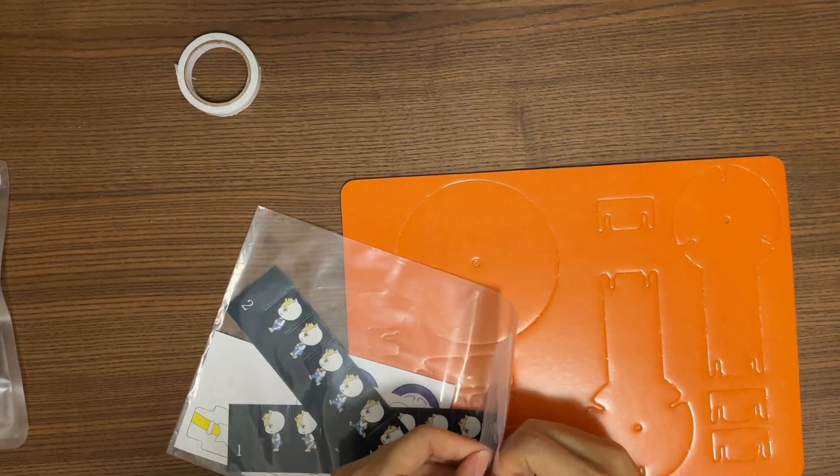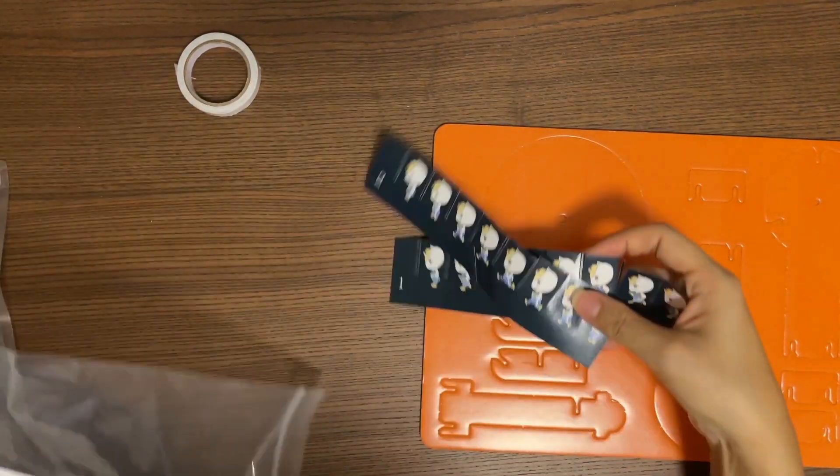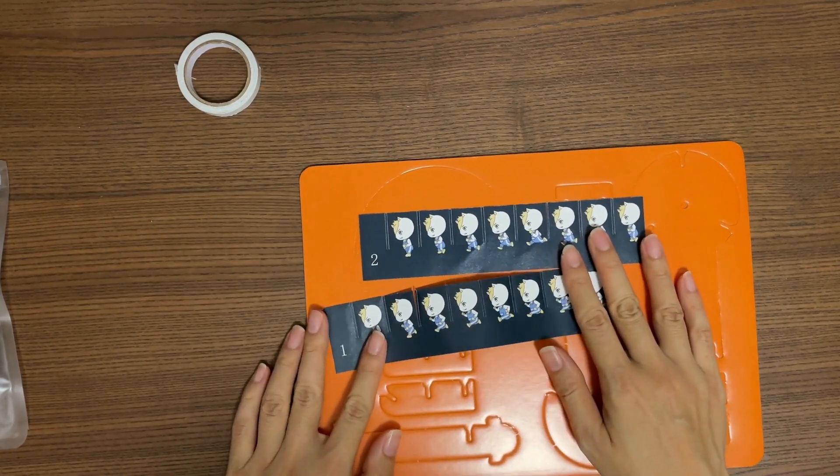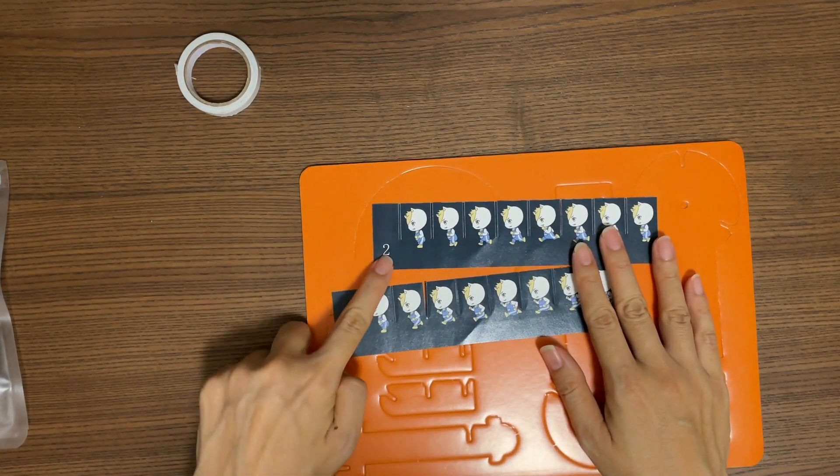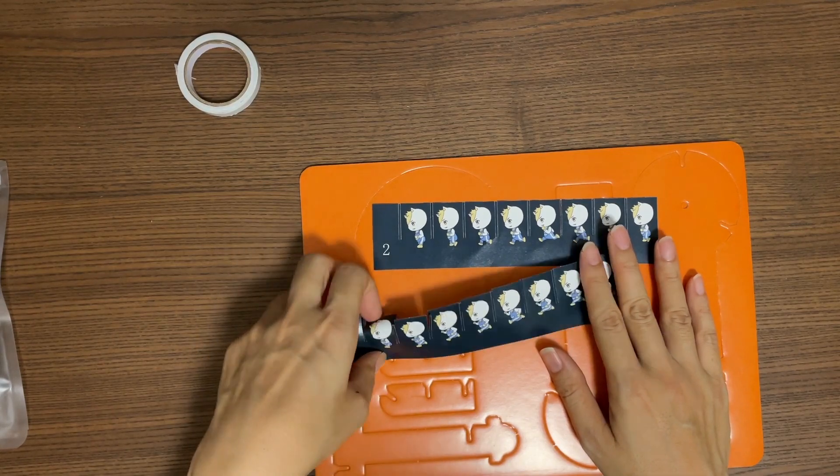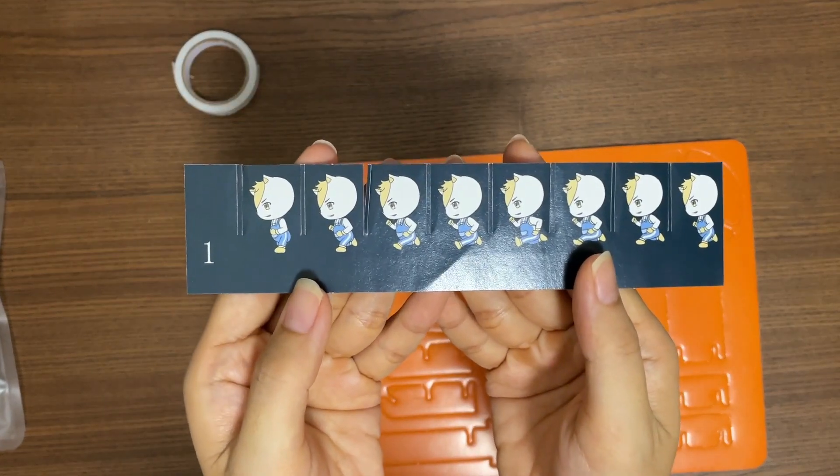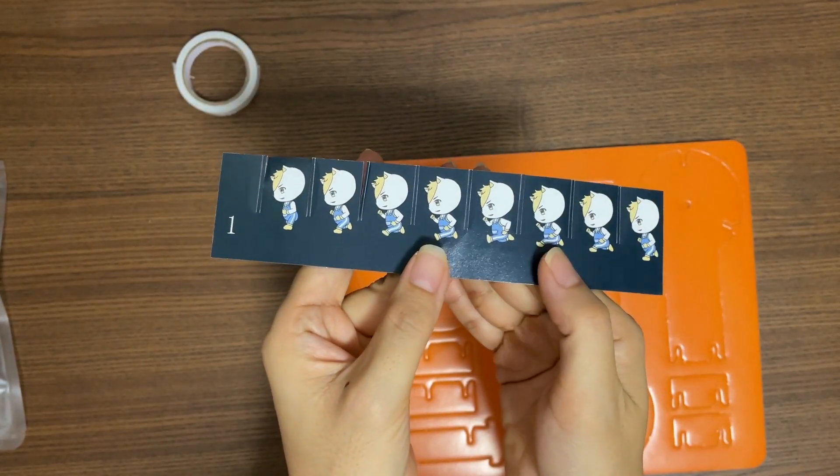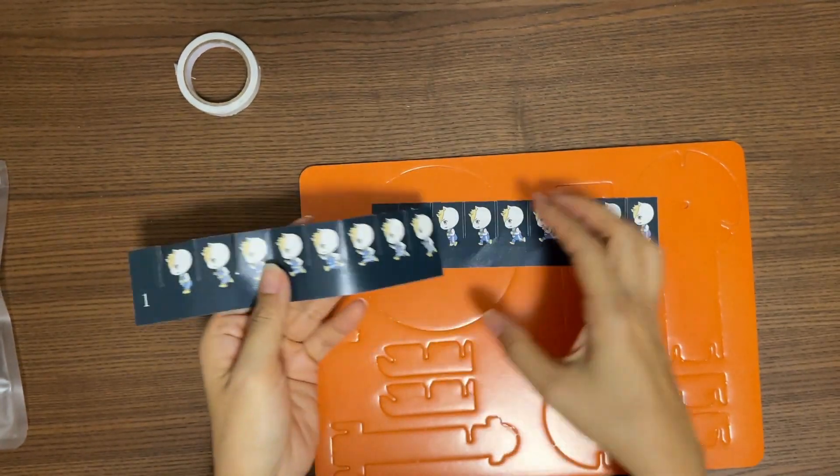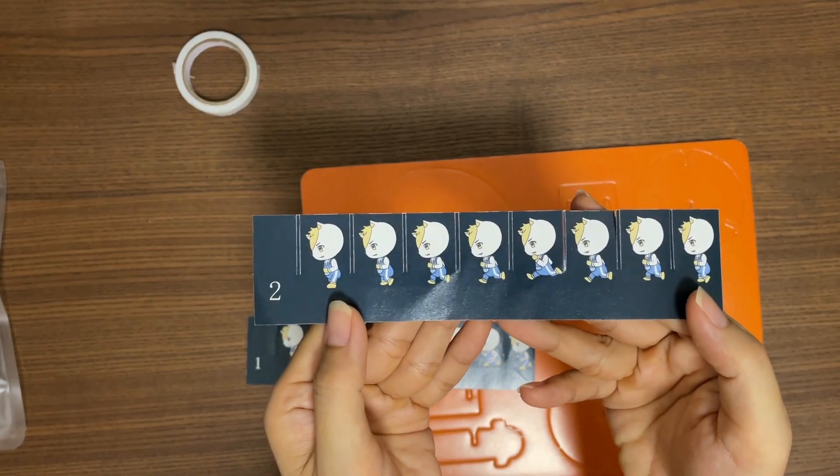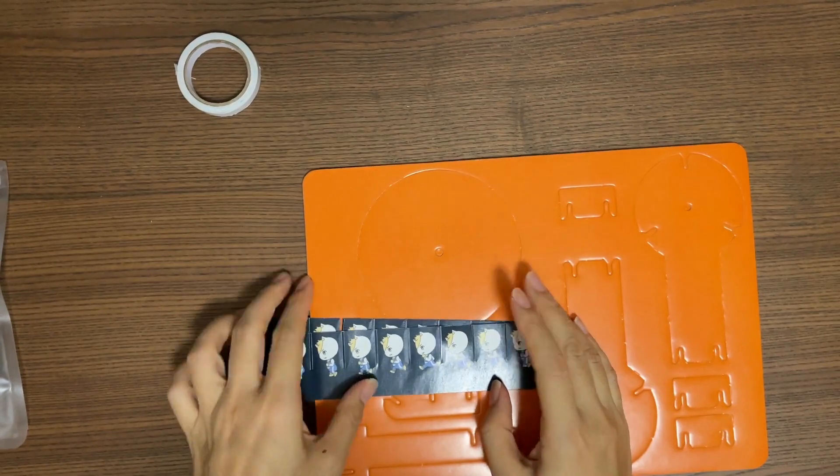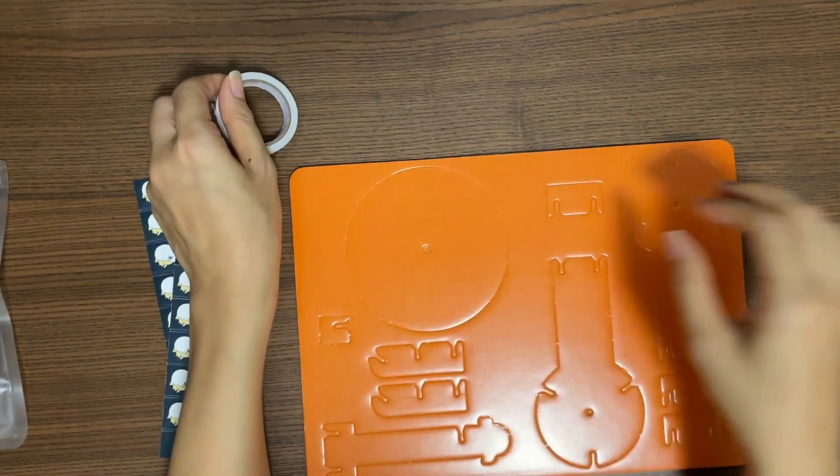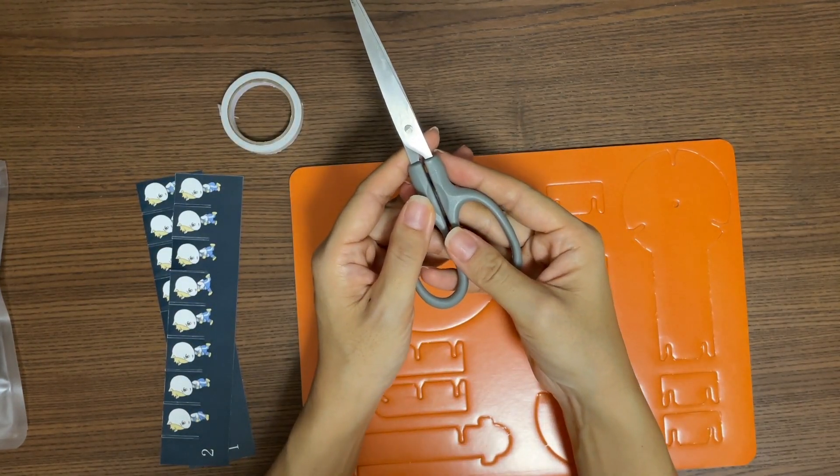Find the ziplock bag. Check out these two pieces of paper. There's a number one and number two on the paper. If you look at this paper, the drawing is a boy running at different positions. The second paper looks similar. We also need a double-sided tape, which is provided in the box, and also a pair of scissors.